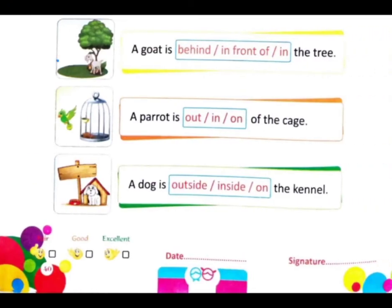Next — a goat is behind / in front of / in the tree. जो goat है वो tree के सामने है। तो सामने का English means क्या होता है? English में होता है — in front of.